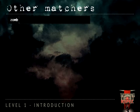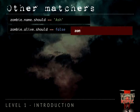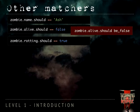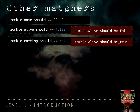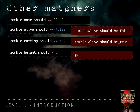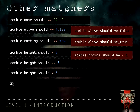Let's look at a couple other examples of matchers. We can check that zombie.alive.should == false, or another way is zombie.alive.should be_false using the be matcher. We can check that zombie.rotting.should be_true, or that height should be > 5, >= 5, or < something. You can also use the be matcher: brain.should be < 1 — completely optional. Should is the modifier, and you can switch it out for should_not if you want to test that the opposite is true.